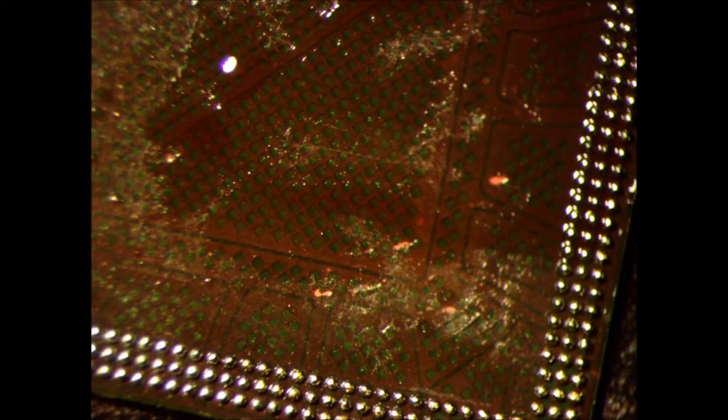After I take off the IC from the stencil, it does not matter what IC it is, I add again flux and heat the balls so they will move into the proper place. They will align. This is the last heat before I place the IC on the CPU or on the logic board.